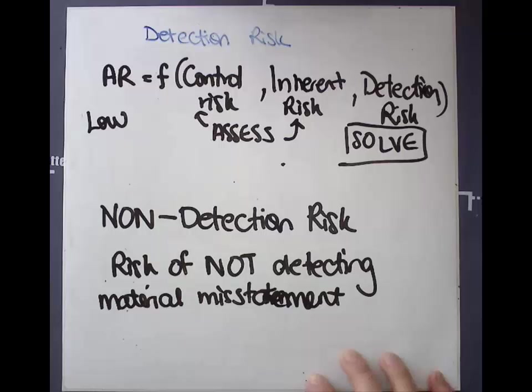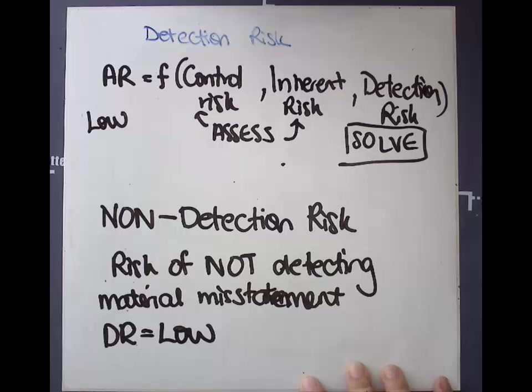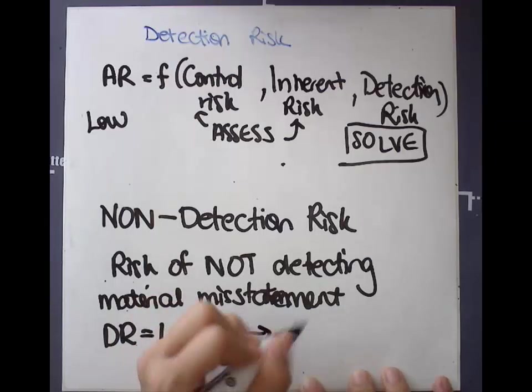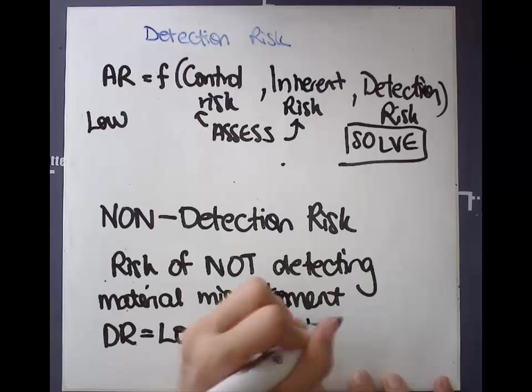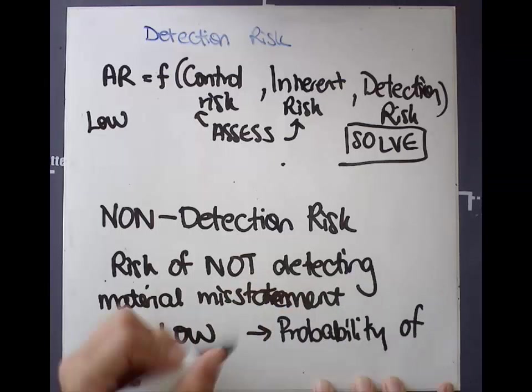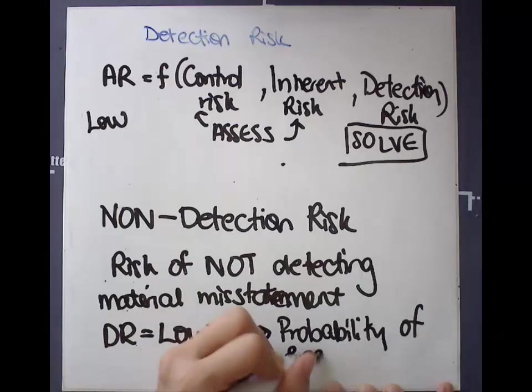So detection risk is the risk of not finding an error. So therefore, if DR equals low, then really what we want is the risk of not finding the error to be low. So therefore, conversely, we want the probability of finding errors or misstatements to be high.